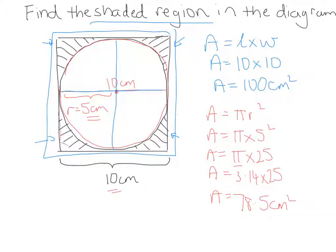So how can I figure out these black shaded bits? Well if I can figure out the area of the whole rectangle and then take away the area of the circle, what will be left over? Only these shaded bits. So let me do that now.